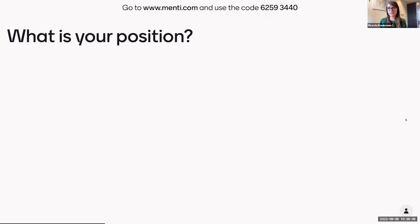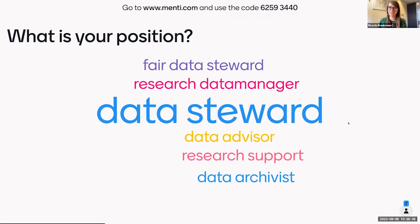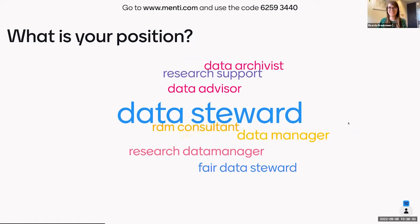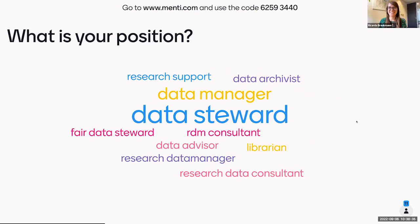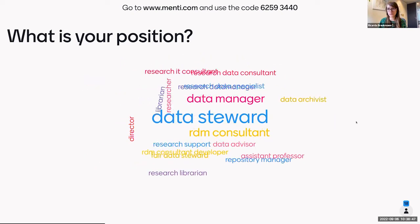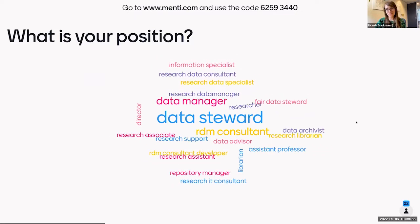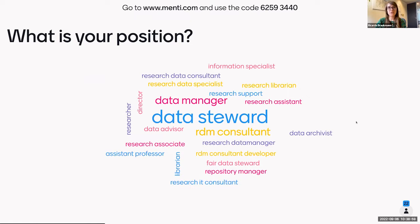The next question is: what is your position — what you're currently doing at your institution? My position is Data Station Manager and Kim is a Research Data Management Specialist. I can see data managers, data stewards quite a lot — that was also our target audience. I also see data archivists, research associates, an assistant professor, research assistants, and developers. A lot of research and research data, which is nice.